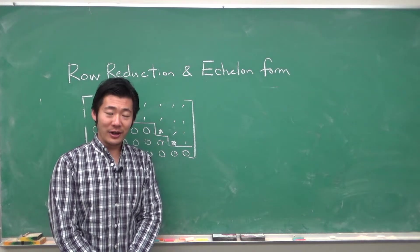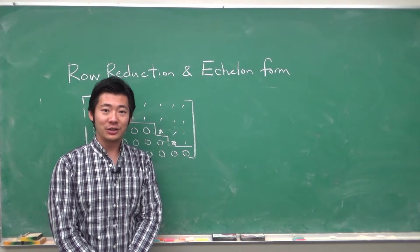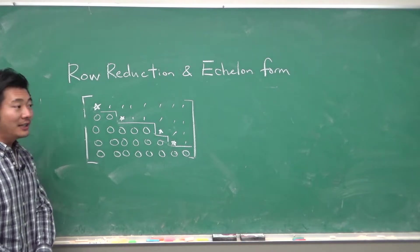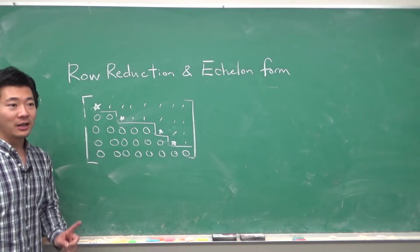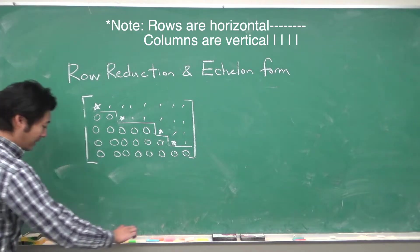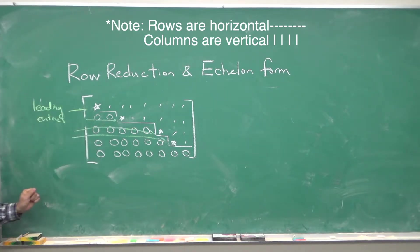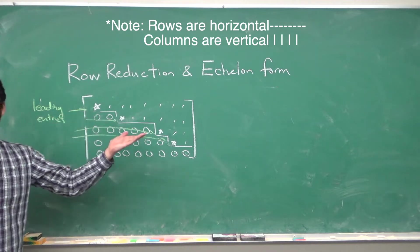Hello, everyone. In this video, I'd like to talk about row reduction in echelon form. So first, a leading entry of a matrix is the first non-zero entry in each row in this matrix. And in echelon form, we want to make sure that all the numbers below the leading entries are zeros. It essentially needs to look like this staircase pattern.